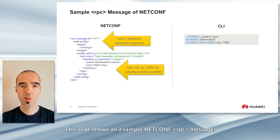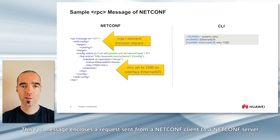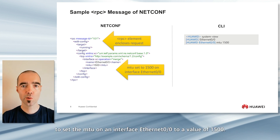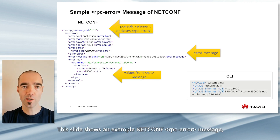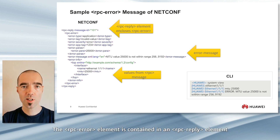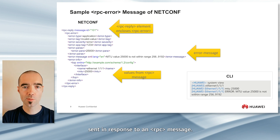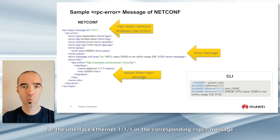This slide shows an example NETCONF RPC message and an equivalent CLI command sequence. This RPC message encloses a request sent from a NETCONF client to a NETCONF server to set the MTU on an interface Ethernet 0.0 to a value of 1500. This slide shows an example NETCONF RPC error message and an equivalent CLI command sequence. The RPC error element is contained in an RPC Reply element sent in response to an RPC message. In this case, the RPC error indicates an invalid MTU value for the interface Ethernet 1.1.1.1 in the corresponding RPC message.